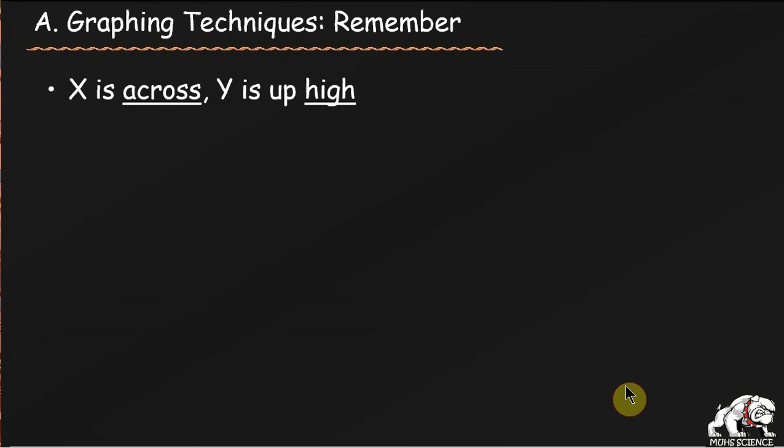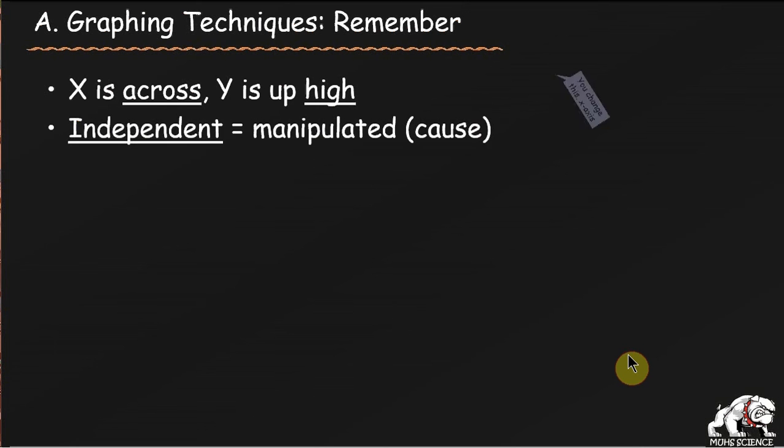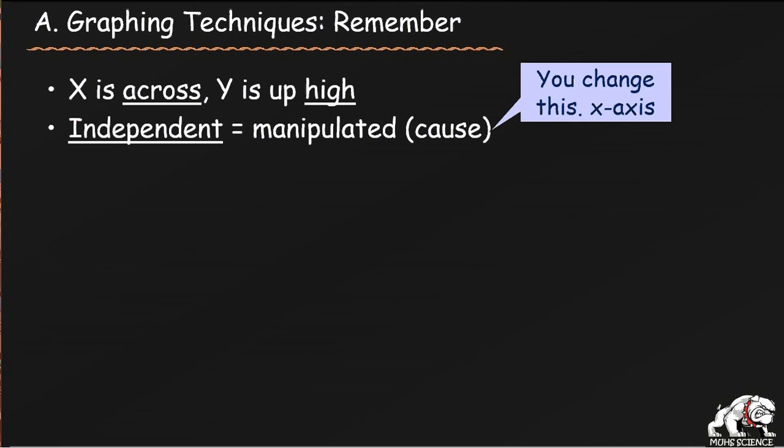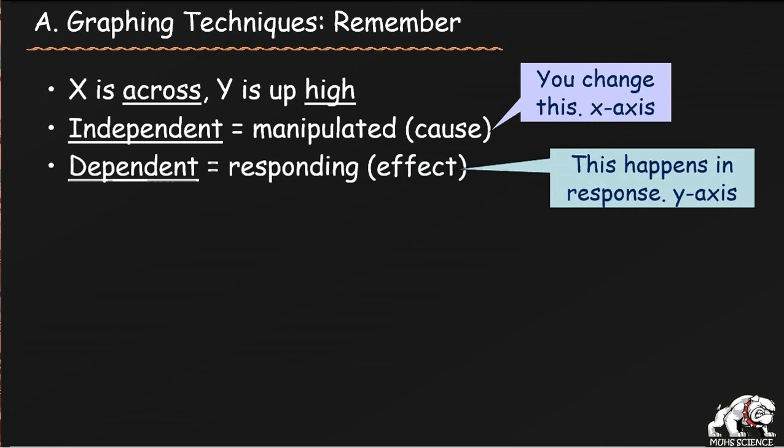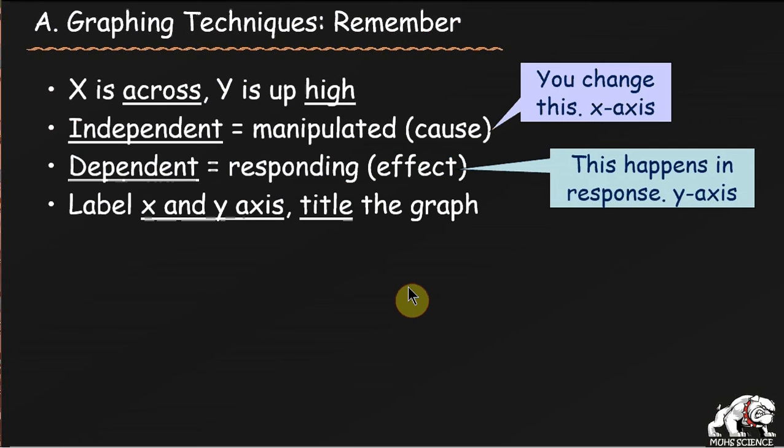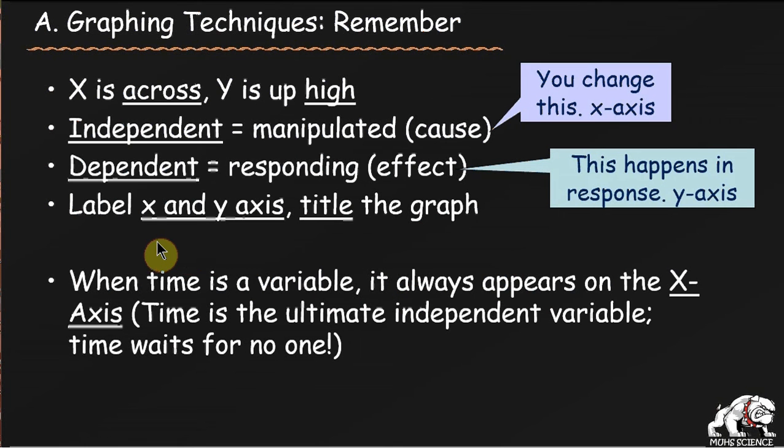When you're graphing you got to remember that the x is across, so sideways, horizontal. Y is up high on the y-axis. The independent variable is the variable that you manipulate. You change that and that goes on the x-axis. If you're timing something time always goes on the x-axis. The dependent variable is what responds. It's the effect and this happens in response to you changing the x variable. When you draw your hand graphs make sure you label the x and y-axis. Make sure you put a title on the graph. Make sure your graph is as large as possible. And then I put a notation on here that whenever you're graphing with time the x-axis is always time. I hope that helps you and you should have section one of your chapter one notes completed.